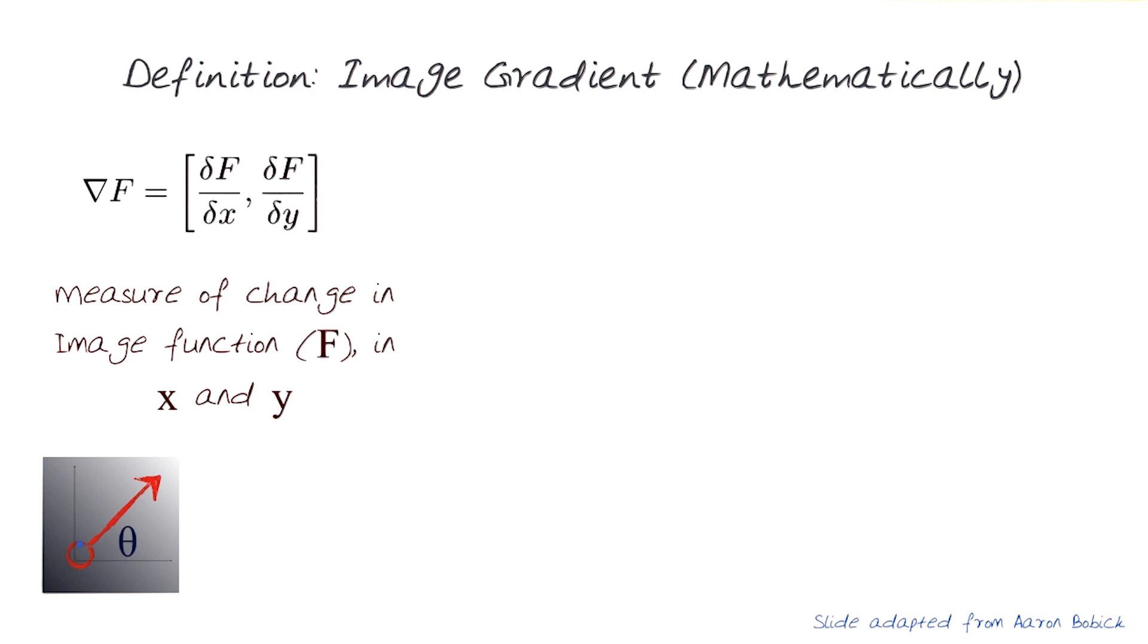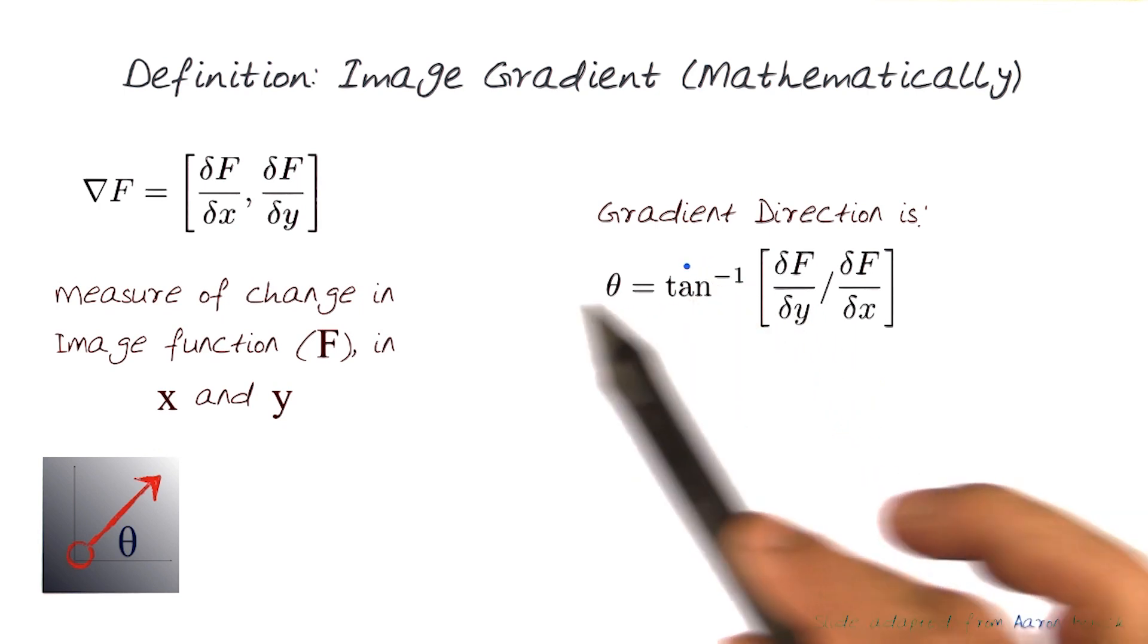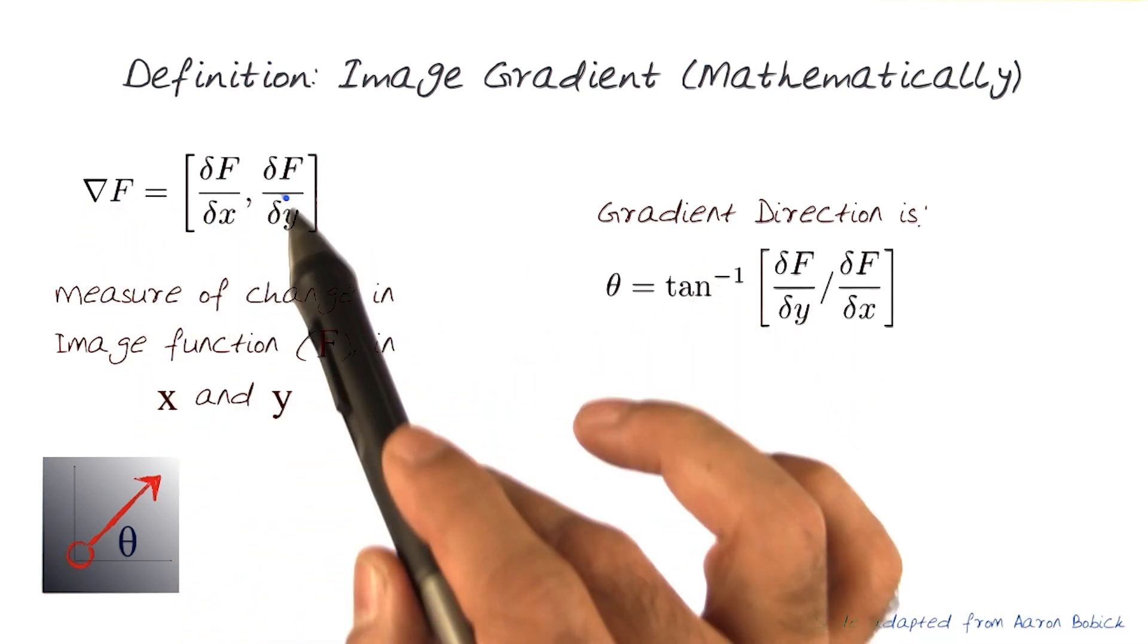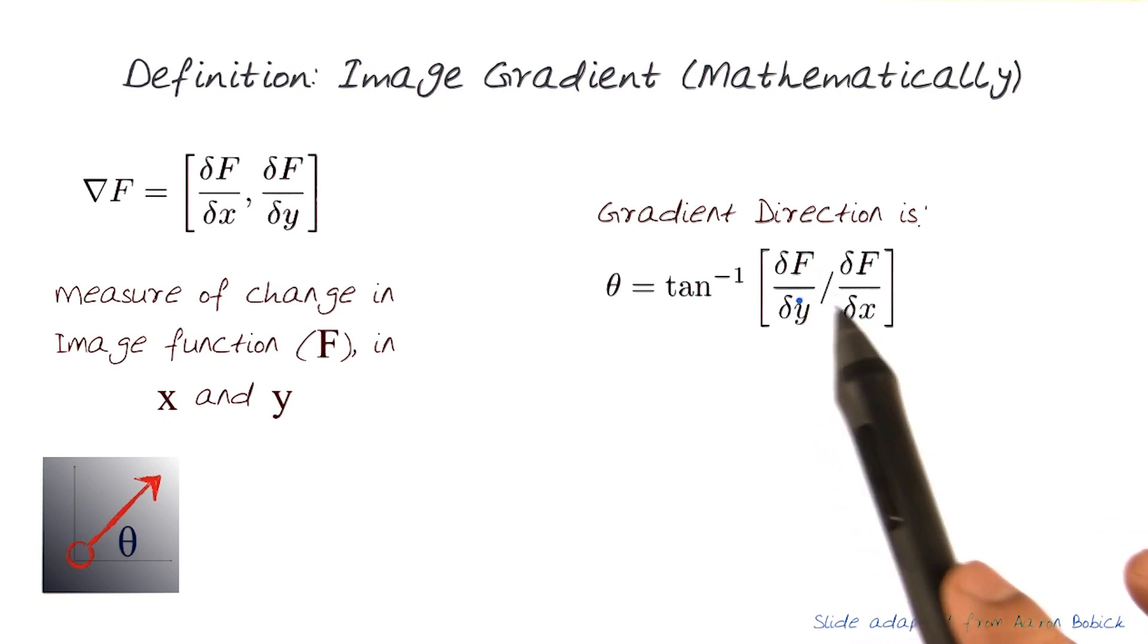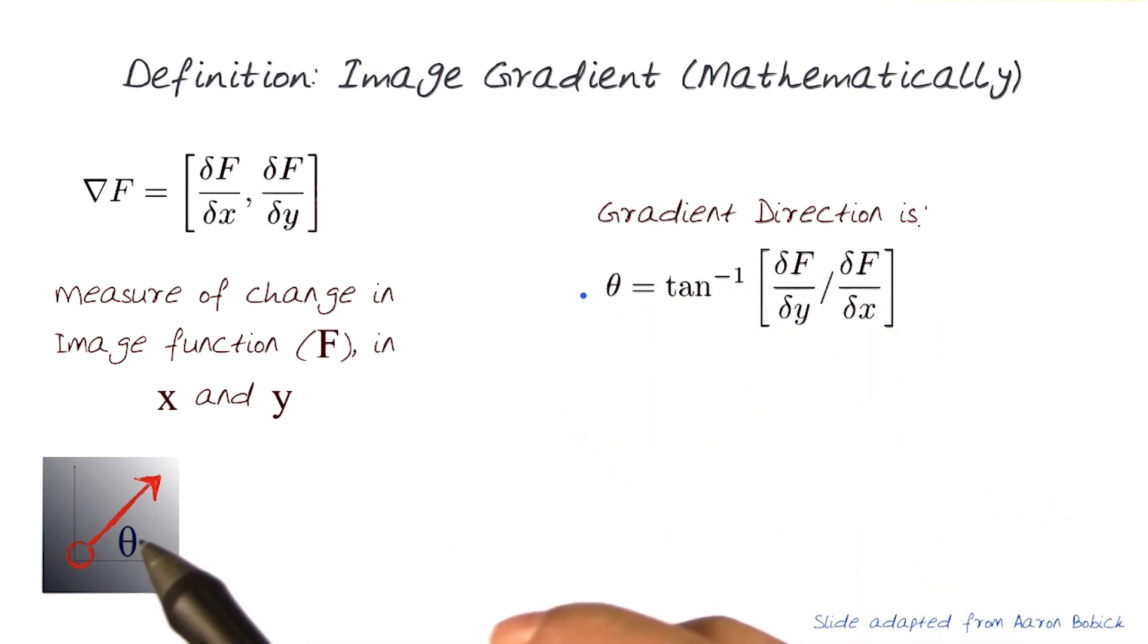Let's look at this a little bit more carefully. How would we compute the gradient direction? Just take the inverse of the tangent. This is my vector del f with x and y. If I know the y and the x changes, I can basically now do the inverse tangent to get theta.